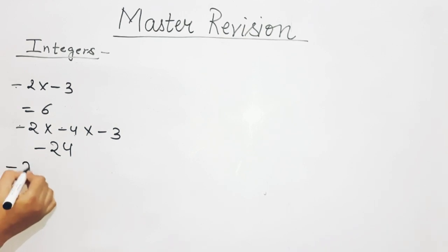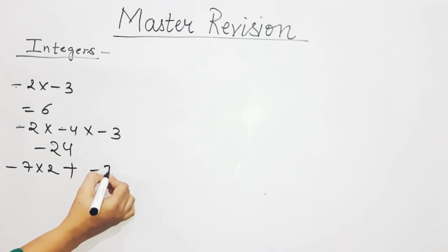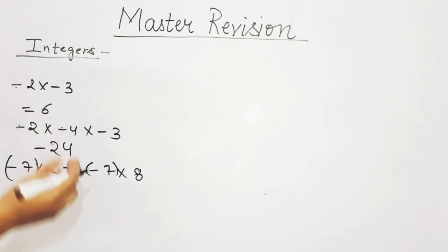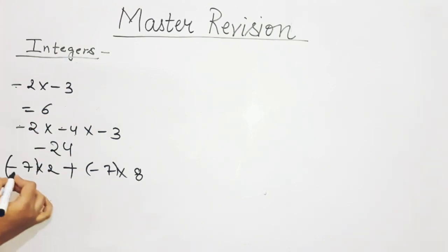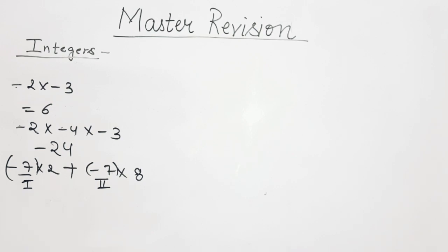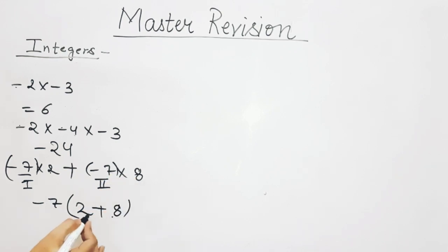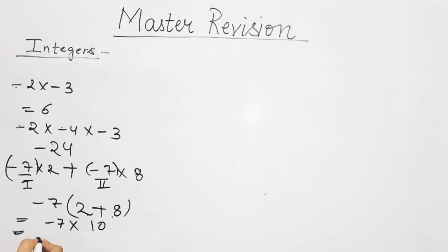If a question comes like minus 7 multiplied by 2 plus minus 7 multiplied by 8 — which property is this? This is the distributive property of multiplication over addition. Here minus 7 is repeated, so you take it outside the bracket: minus 7 multiplied by bracket 2 plus 8. Now 2 plus 8 is 10, so minus 7 multiplied by 10 equals minus 70.